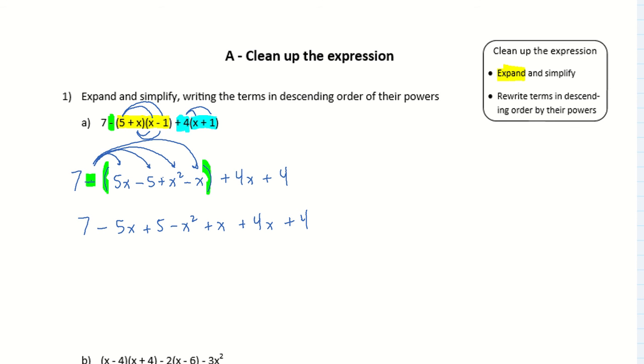And then finally, we have to take each term and rewrite the terms in descending order by their powers. So that is, we want the x squared, all the x squareds first this time, so there's only one. So it's going to be negative x squared. Then, we're going to do our x term, so negative 5x plus x plus 4x, so negative 5 plus 1 plus 4, they all cancel out. So, and the last thing we're going to do then is, we have 7 and 5 is 12, and this is plus 16.